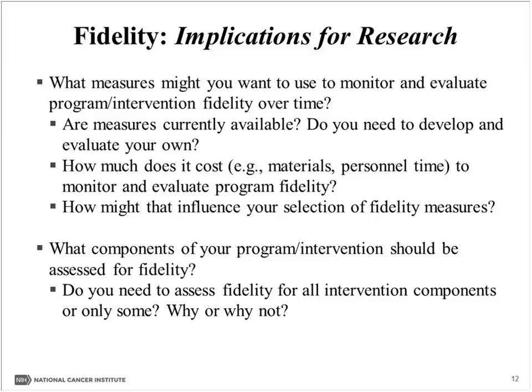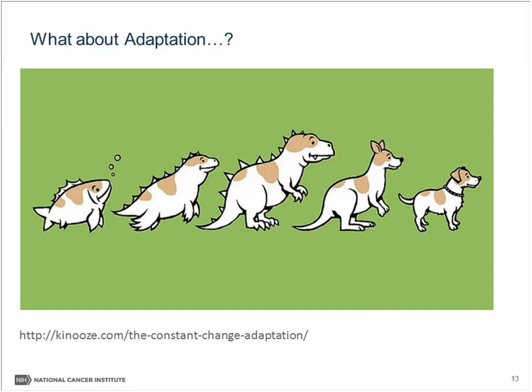It depends — and you'll hear that a lot in dissemination and implementation research — but these are important questions to grapple with. On the other side of the coin, fidelity is often set apart from adaptation. If we keep things in a similar form throughout, we're maintaining fidelity. But of course there are many places where adaptation may creep in. This next section is really about thinking about the implications of, and ways we might consider, adaptation of interventions as they're disseminated and implemented.